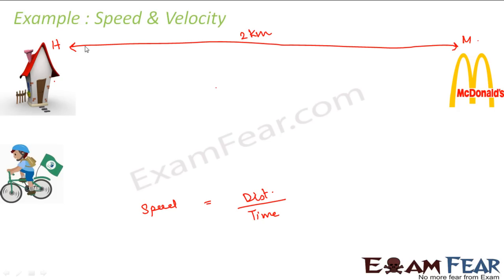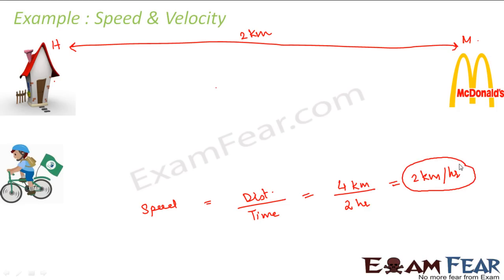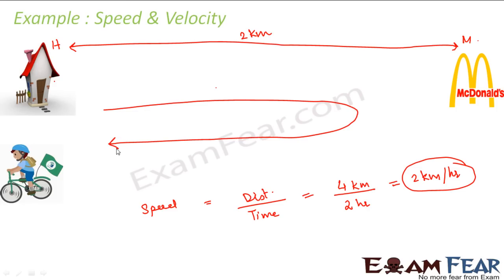The total distance traveled is 2 kilometers going plus 2 kilometers coming back, which equals 4 kilometers. Time taken: he took 1 hour to go to McDonald's and 1 hour coming back, so total time is 2 hours. Speed = 4 km / 2 hours = 2 kilometers per hour. So 2 km/hr is the total speed for this journey — home to McDonald's and back.